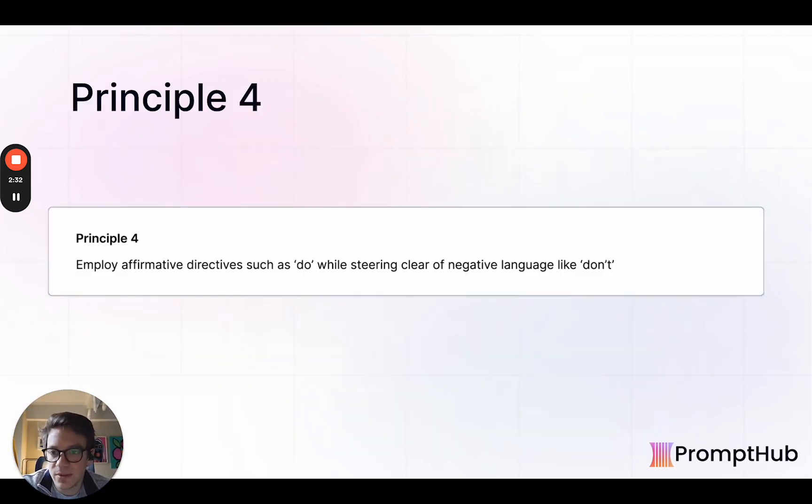We're going to look at a few examples, and we're not going to run through all 26, but we're going to check out a few that kind of stuck out to us that were interesting. So the first being Principle 4, basically tell the model what to do, not what not to do. And this was something OpenAI acknowledged in their first round of prompt engineering principles that they launched.